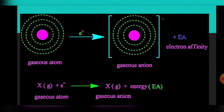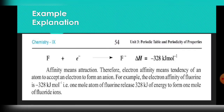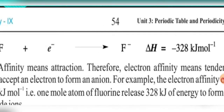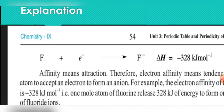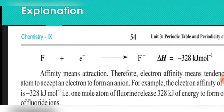An electronegative atom — for example, chlorine — is an electronegative element. When we add an electron to its outer shell, chlorine belongs to Group 7 so it has seven electrons in its outer shell. When we add an electron to the outer shell of chlorine in its gaseous form, it converts into a negative ion. The amount of energy released is minus 328 kilojoules per mole.